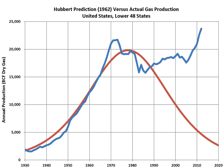Brief oil interruptions in 1973 and 1979 markedly slowed — but did not stop — the growth of world GDP. Between 1950 and 1984, as the Green Revolution transformed agriculture around the globe, world grain production increased by 250 percent. The energy for the Green Revolution was provided by fossil fuels in the form of fertilizers, pesticides, and hydrocarbon-fueled irrigation.